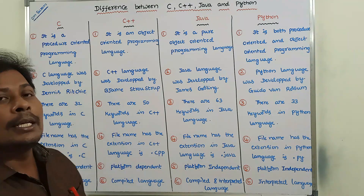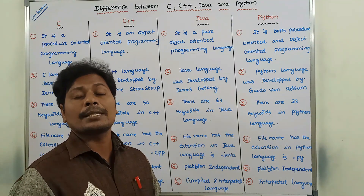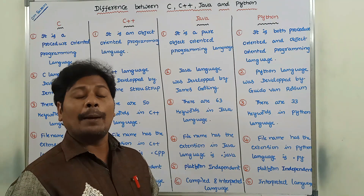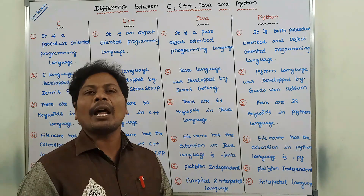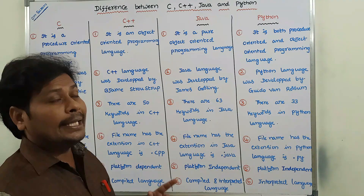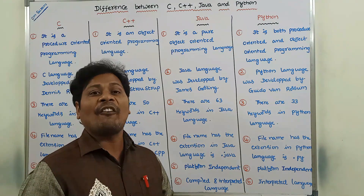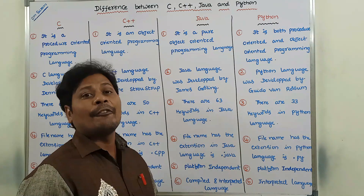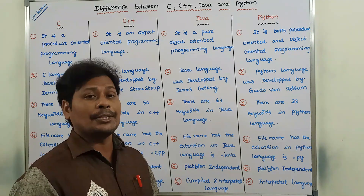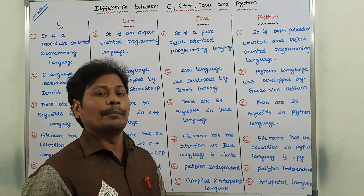Second point: C language was developed by Dennis M. Ritchie, whereas C++ language was developed by Bjarne Stroustrup. Java language was developed by James Gosling, and Python language was developed by Guido Van Rossum. These members can be called as fathers of their corresponding languages. Father of C++ is Bjarne Stroustrup, father of Java is James Gosling, and father of Python is Guido Van Rossum.